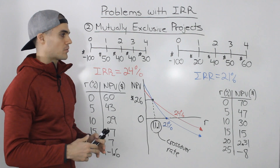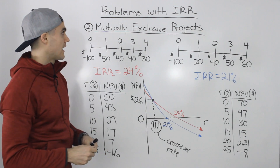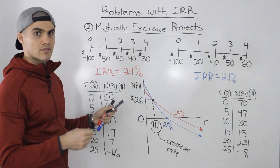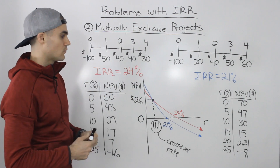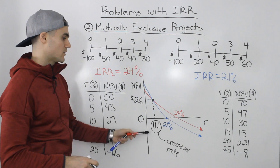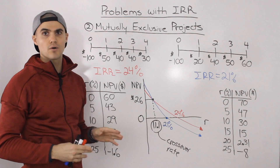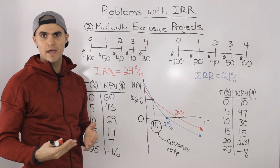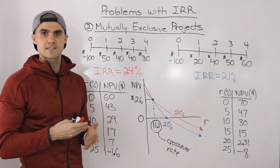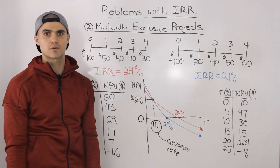To summarize, the two problems with IRR are: first, projects with unconventional cash flows can produce multiple IRRs, making the decision rule unreliable; second, when comparing mutually exclusive projects, basing the decision solely on IRR won't always give the correct result — it depends on the required rate of return. Outside of these two issues, if a project is independent and has conventional cash flows, IRR will always give the same accept/reject result as NPV.